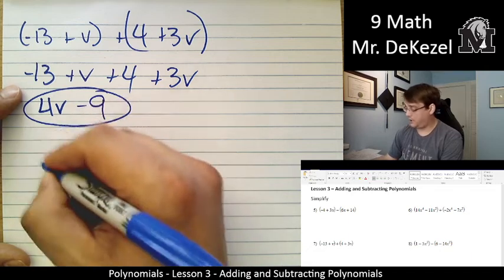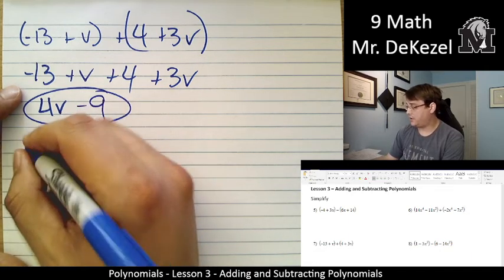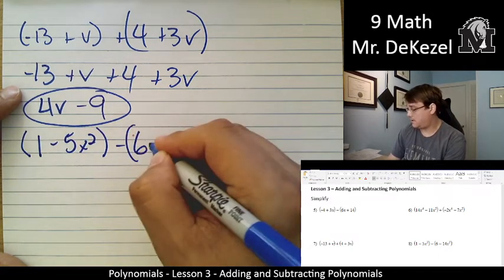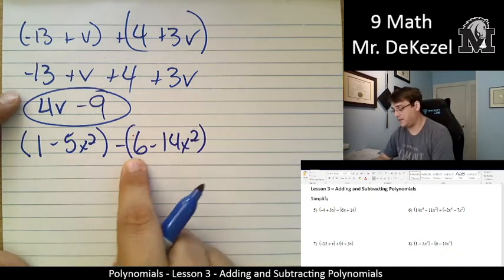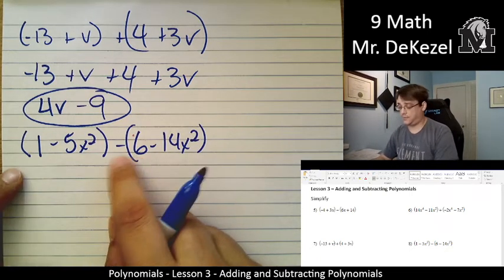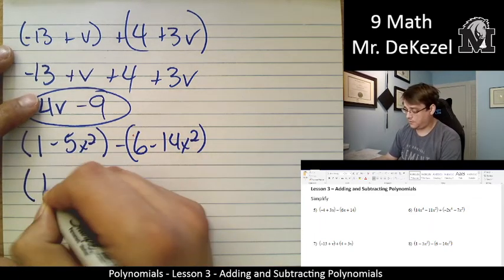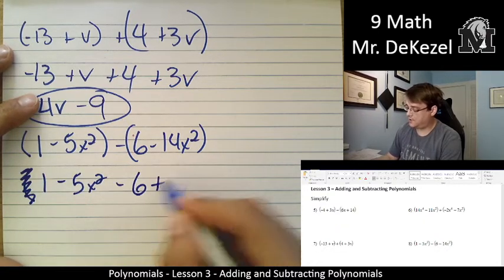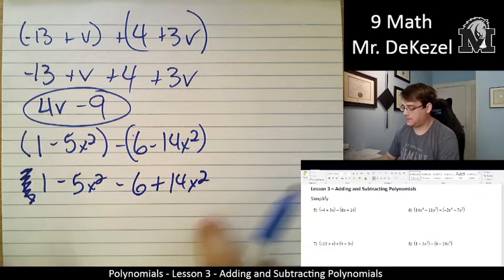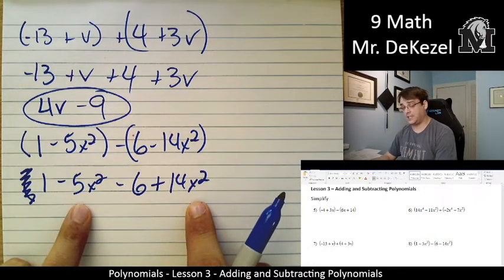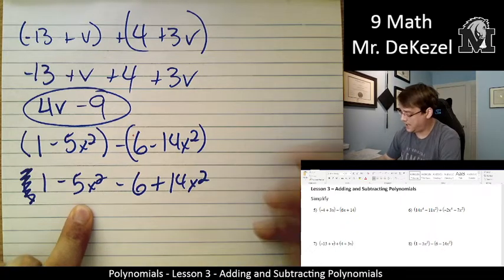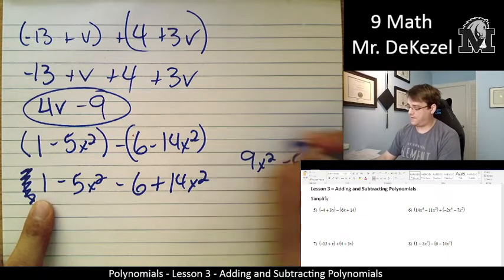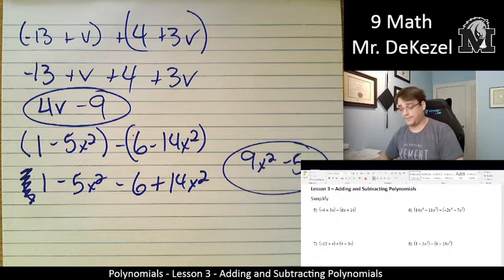Let's do one more here before we let you try it on your own a little bit. 1 minus 5x squared minus 6 minus 14x squared. We have a negative sign, so we're going to rewrite it with the opposite signs. 1 minus 5x squared. Minus 5 plus 14, that gets us to the positive side, so we have positive 9x squared. And then minus 6 plus 1 is minus 5.